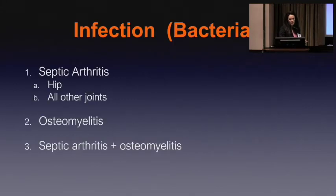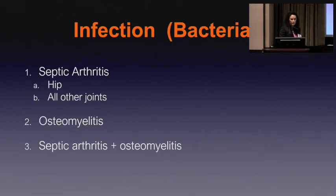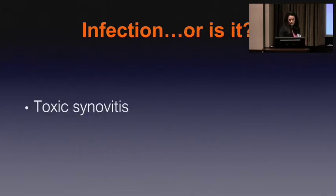We're going to talk about septic arthritis, dividing that into the hip and all the other joints, because of anatomy — the hip is obviously a deeper structure, so the approach to diagnosis is a little different. We're going to briefly touch on osteomyelitis, but Dr. Gagliardo will really get into that in the next topic. And then we're going to talk about the combo situation between septic arthritis and osteo, and the great mimicker — is this toxic synovitis or is this an actual bacterial infection?